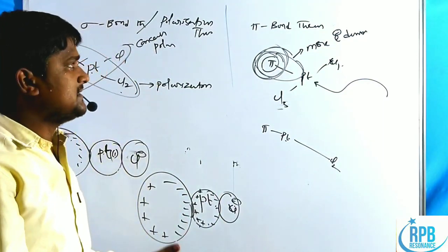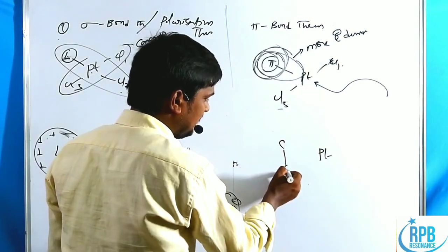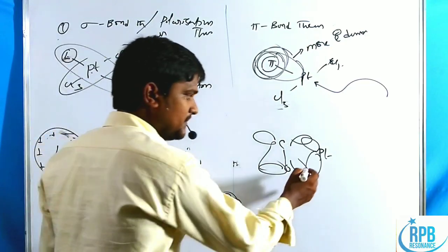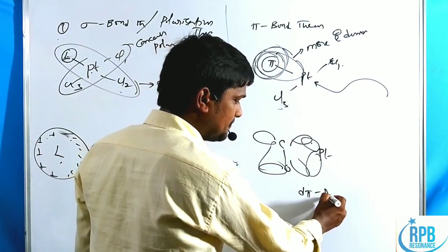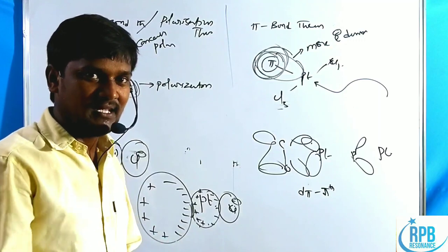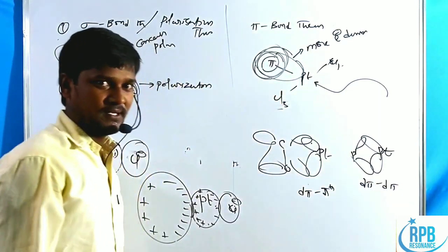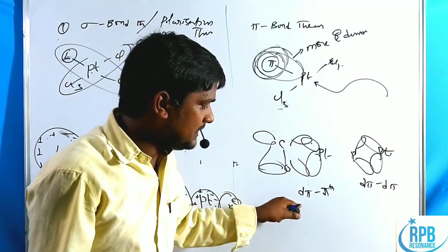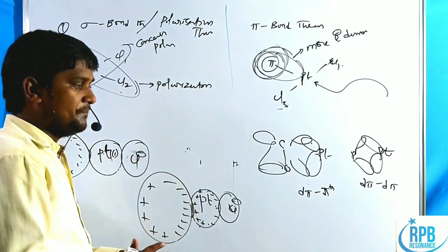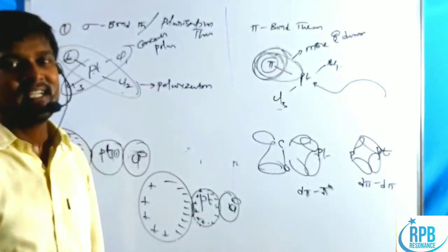These two theories explain the mechanism of trans-directing groups. Pi acceptor ligands form d-pi to pi* bonds or d-pi to d-pi bonds with the metal. These two types of bonds are present in the pi bond theory. Both theories — sigma bond/polarization and pi bond — are helpful to determine the trans-directing group series.